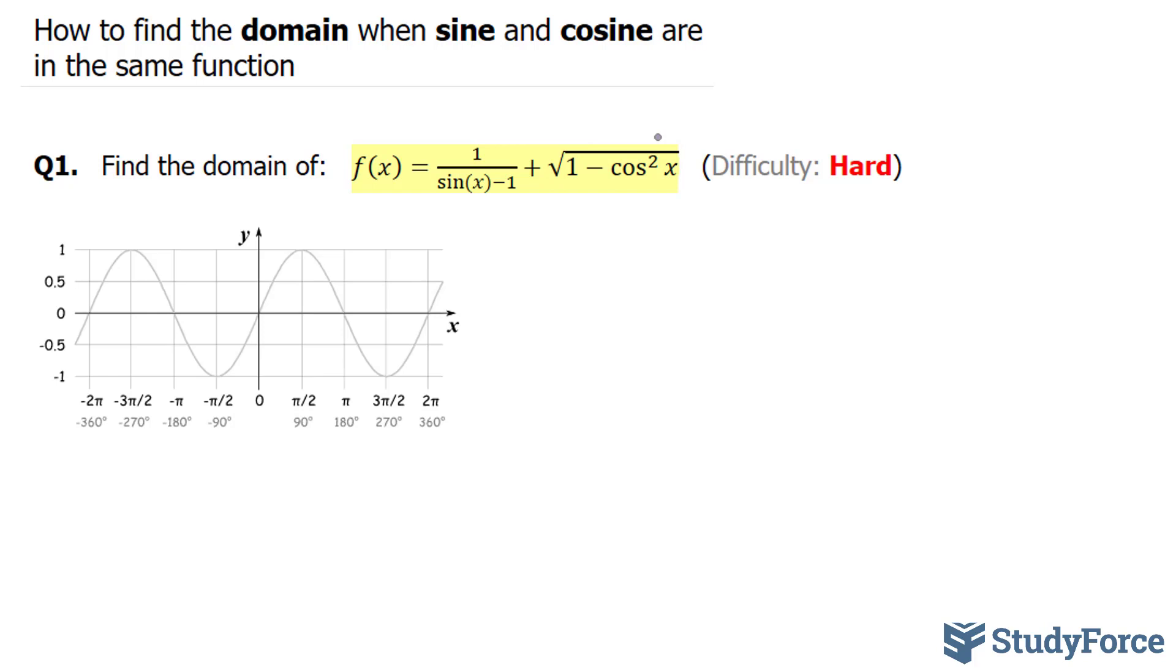We know no number can be divided by 0. So in our case, sin(x)-1 cannot equal 0. So let's solve for sin(x). Let's move this negative 1 over. If we do that, we end up with positive 1.